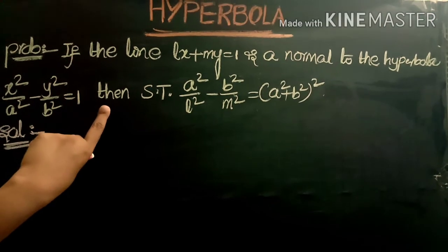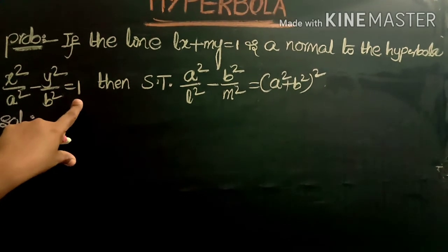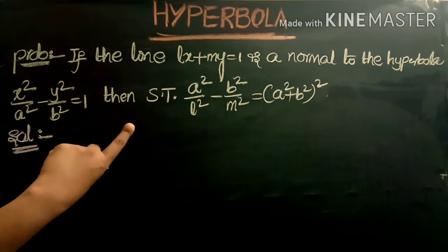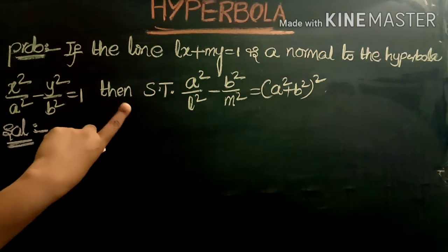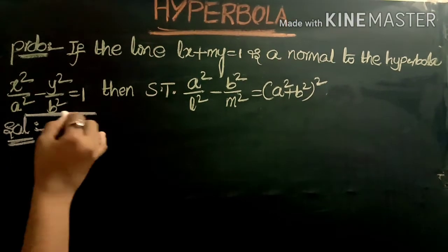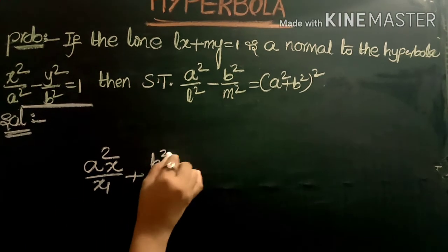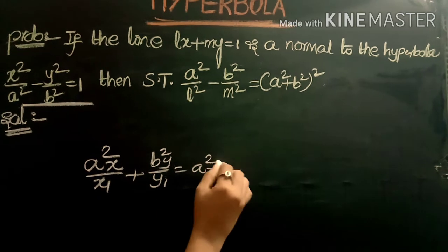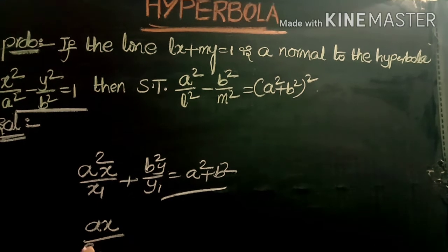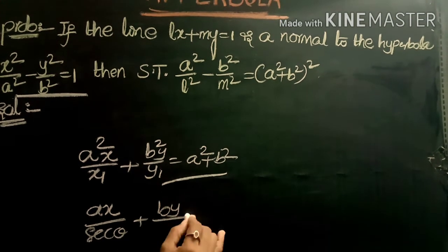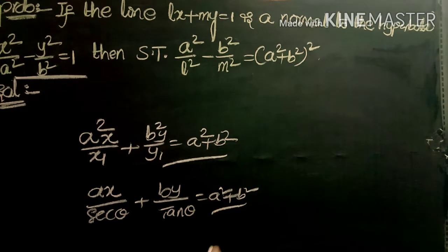Problem 1: If the line lx + my = 1 is a normal to the hyperbola x²/a² - y²/b² = 1, then show that a²/l² - b²/m² = (a² + b²)². The equations of the normal to this hyperbola are: first, a²x/x₁ + b²y/y₁ = a² + b², which is the equation of the normal at point (x₁, y₁); and second, ax·sec θ + by·tan θ = a² + b², the equation of the normal at point (a·sec θ, b·tan θ).